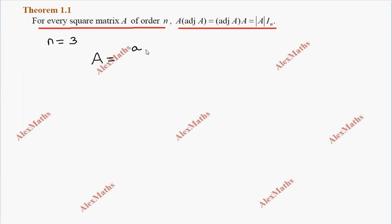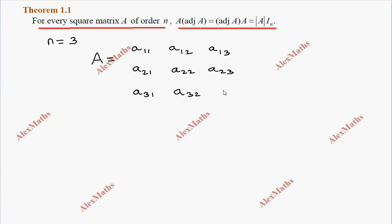Now we can write matrix A with elements: a₁₁, a₁₂, a₁₃ in the first row; a₂₁, a₂₂, a₂₃ in the second row; and a₃₁, a₃₂, a₃₃ in the third row.